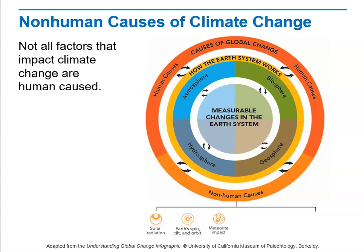Meteorite impacts are another factor. Our atmosphere and other things in our solar system protect the Earth from most meteorites, but meteorite impacts can affect climate.